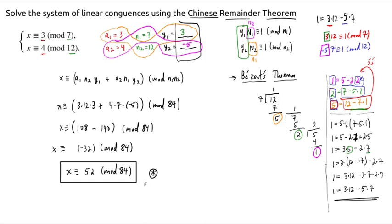So you should have already checked that this is the answer because this is an example we've done another way. But if you haven't, make sure that you check that 52 is actually congruent to both 3 mod 7 and 4 mod 12.